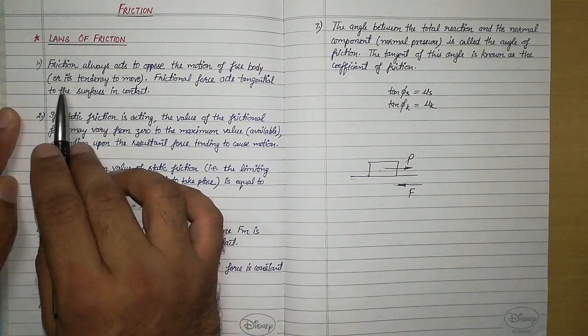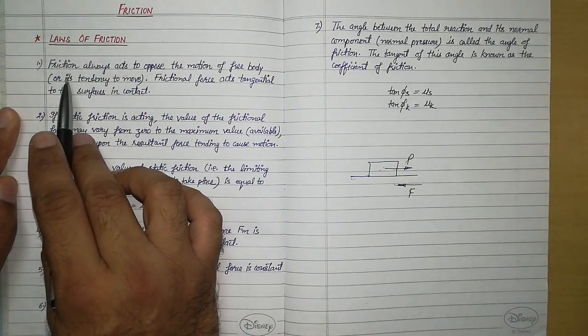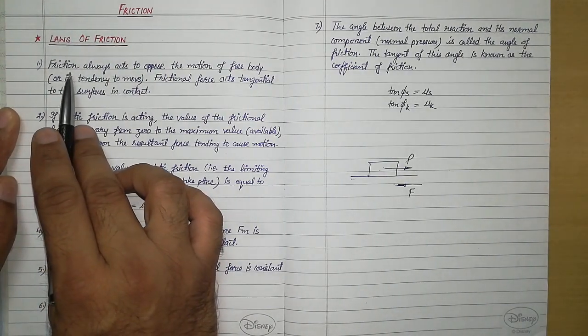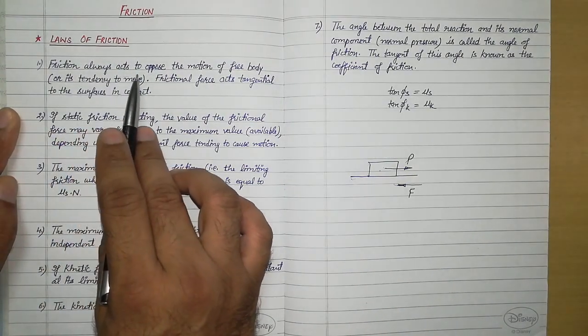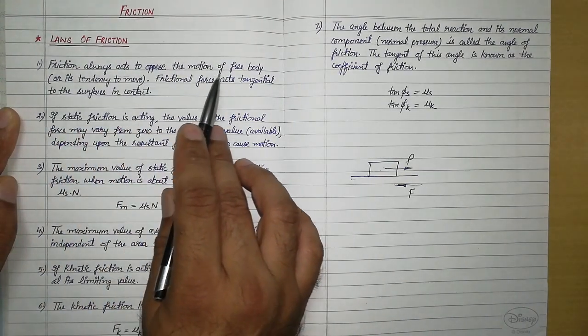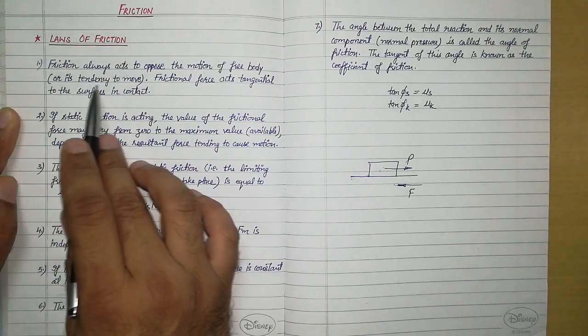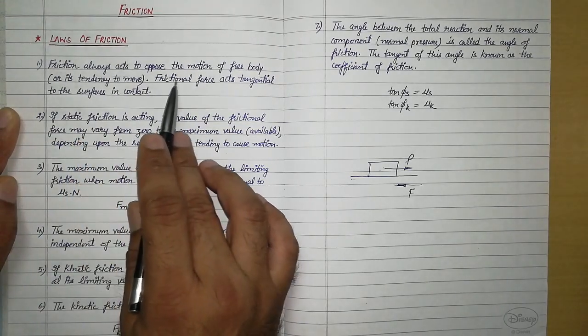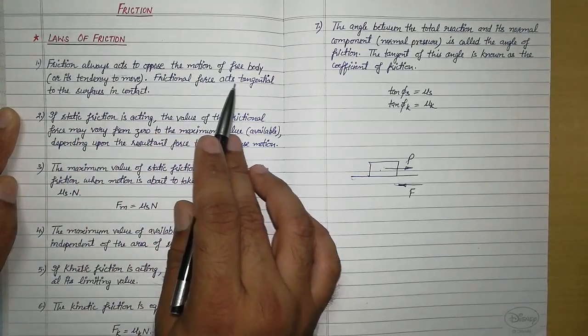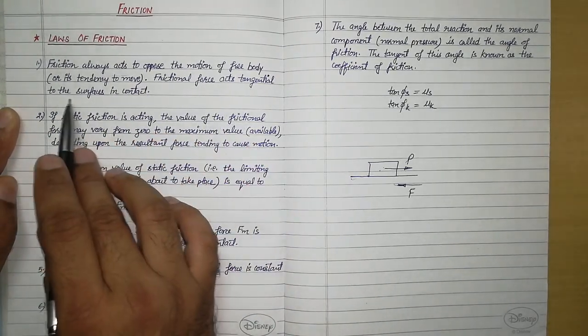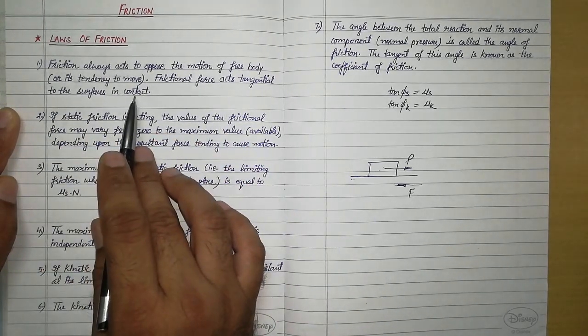Let us start with the first statement: friction always acts to oppose the motion of a free body or its tendency to move. Frictional force acts tangential to the surfaces in contact.